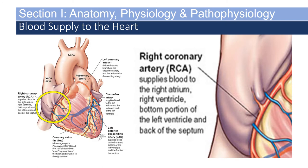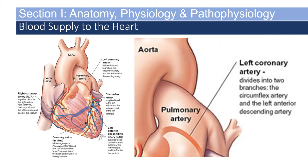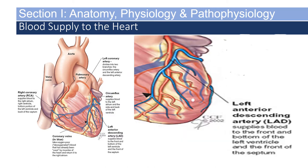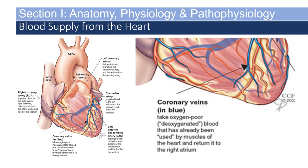The right coronary artery supplies blood to the right atrium, right ventricle, bottom portion of the left ventricle, and back of the septum. The left coronary artery divides into two branches: the circumflex artery and the left anterior descending artery. The circumflex artery supplies blood to the left atrium and the side and back of the left ventricle. The left anterior descending artery, or LAD, supplies blood to the front and bottom of the left ventricle and the front of the septum. The coronary veins return deoxygenated blood from the heart muscle back to the right atrium.